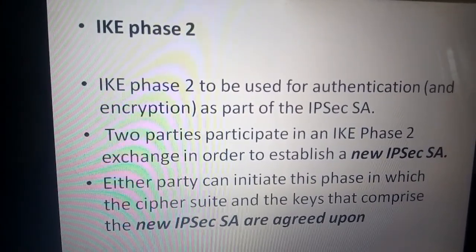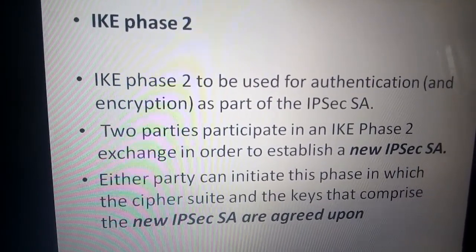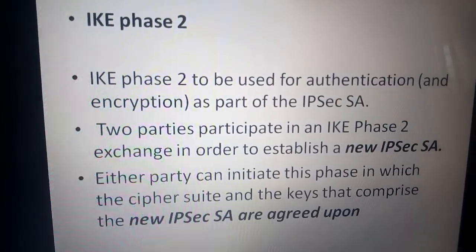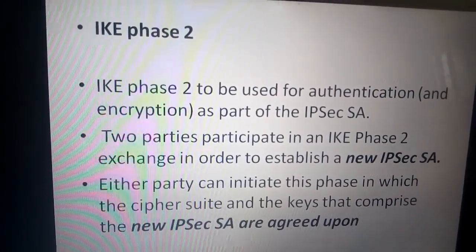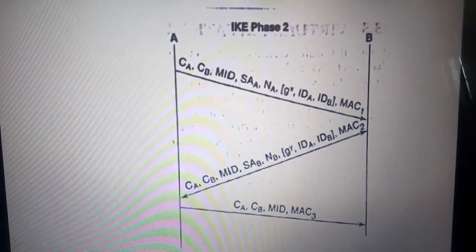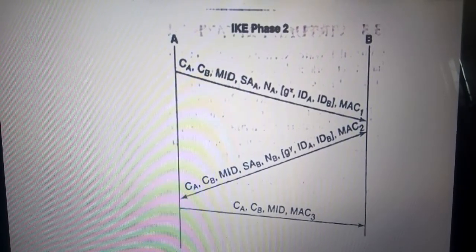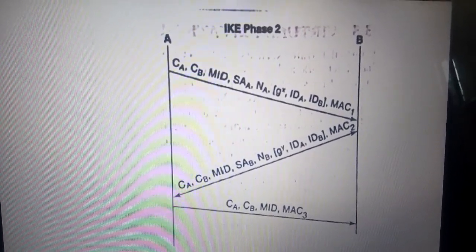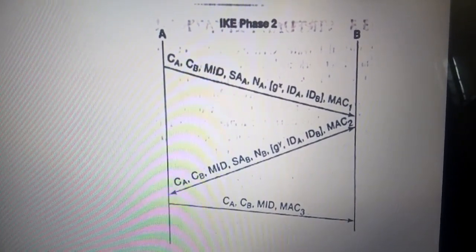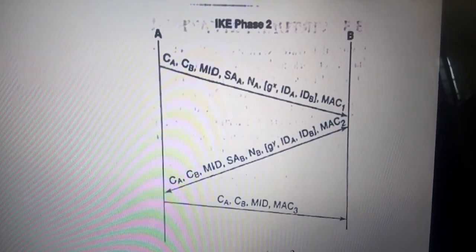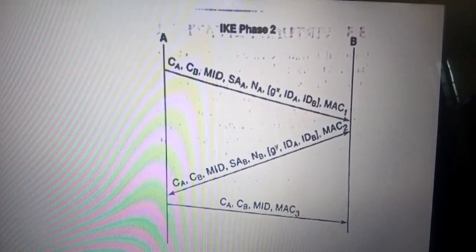IKE Phase 2 is used for authentication as part of IPsec. Two parties participate in an IKE Phase 2 exchange to establish a new IPsec SA; either party can initiate this phase, in which the cipher suite and the keys that comprise the new IPsec SA are agreed upon. This is called quick mode. All messages are encrypted using the secret key computed in Phase 1. Message integrity and data source authentication are provided using HMAC, where the key for HMAC is Key_A, also computed in Phase 1. A 32-bit message ID (MID) distinguishes this Phase 2 session from others within the same IKE SA.